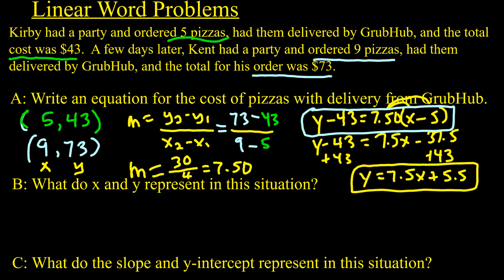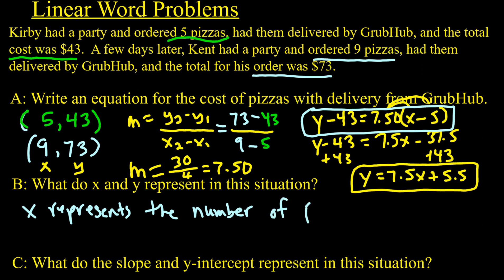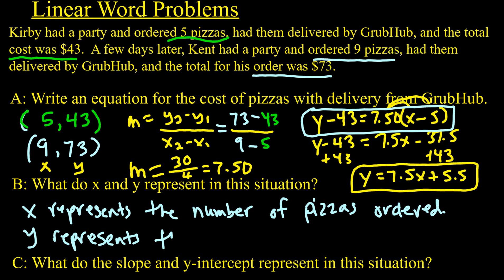We've already answered part B — what do x and y represent? X represents the number of pizzas ordered, and y represents the total cost. Be more descriptive: x isn't just 'pizzas,' it's the number of pizzas ordered. Y doesn't just represent dollars; it represents the total cost for the situation.